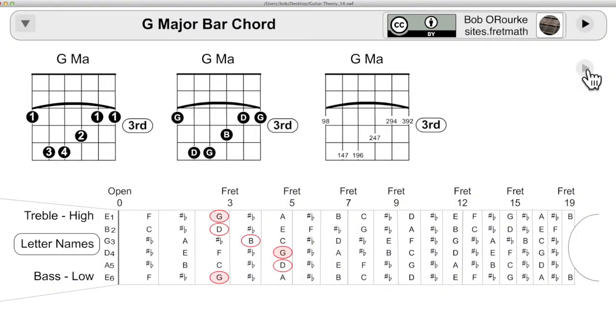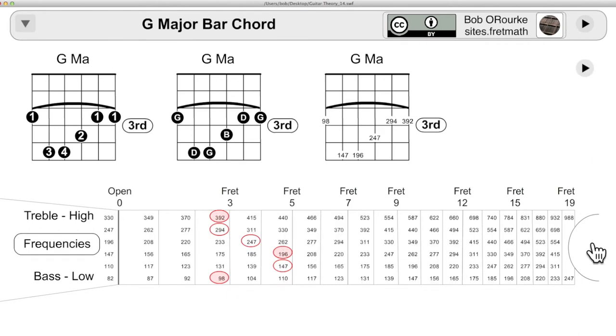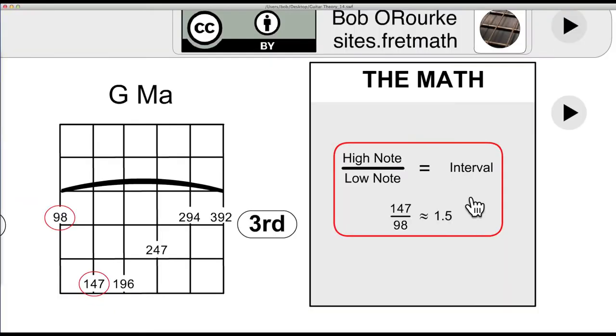Most of the videos here are better suited for the science classroom than the music room. One idea that could be useful to the guitarist is the musical intervals: the octave, perfect fifth, perfect fourth, and the major and minor thirds.